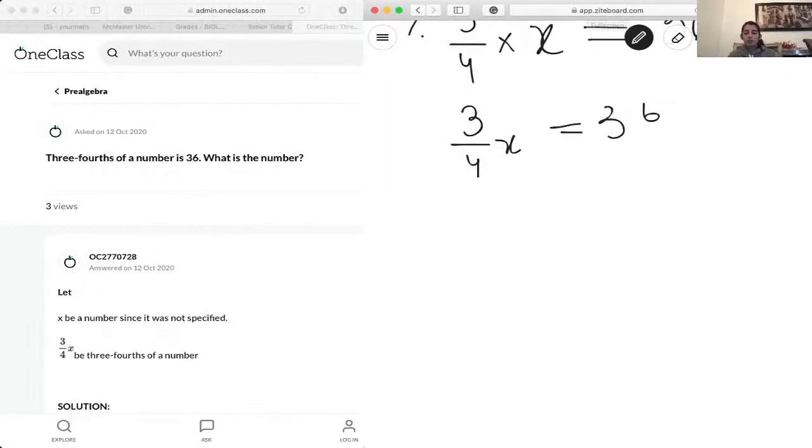We can do that by multiplying 4 on each side to get rid of this 4 at the bottom. So whatever we do to one side, we have to do the other side, times 4. That gets cancelled out, we're left with 3.